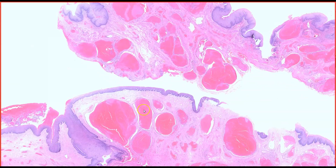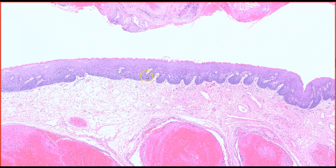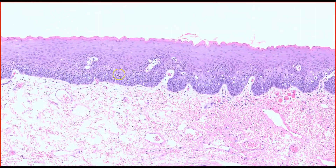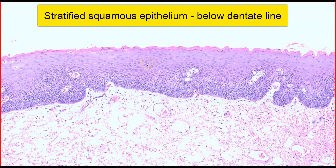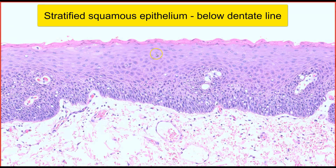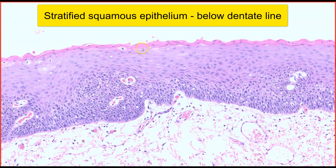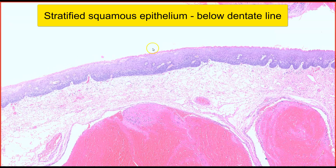Let's have a look at this mucosa. In this area, we can see that the overlying mucosa is stratified squamous epithelium, and there is a thin layer of keratinization. This epithelium may be keratinized or non-keratinized depending on where the hemorrhoid is located.